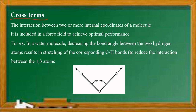Cross terms refer to the interactions between two or more internal coordinates of a molecule. These are sometimes included in force fields to achieve optimal performance. For example, in a water molecule, if you decrease the bond angle, stretching of the corresponding bond lengths takes place to reduce the interaction between the atoms. This coupling between internal coordinates is known as a cross term.